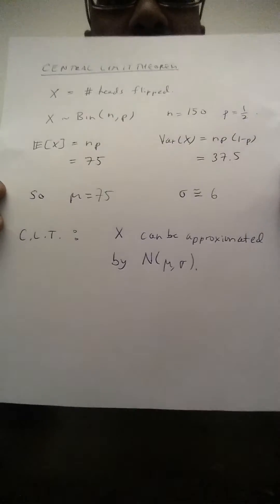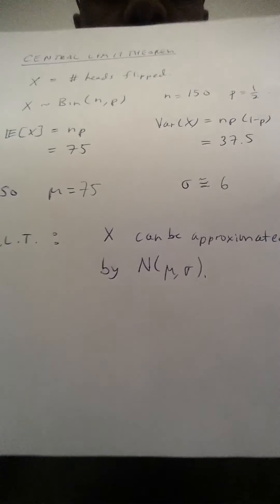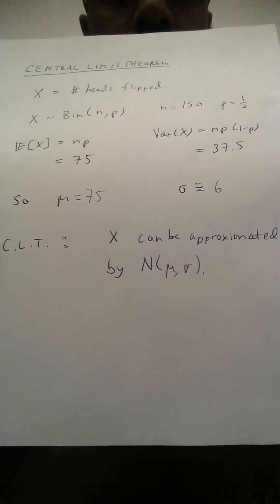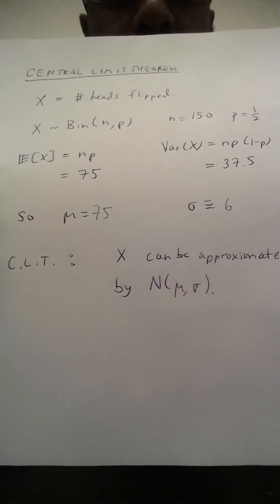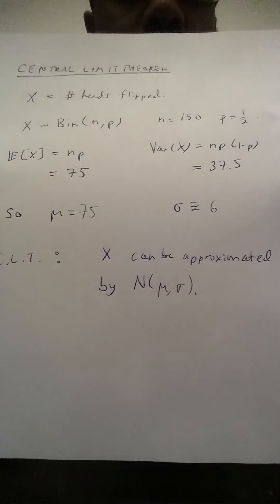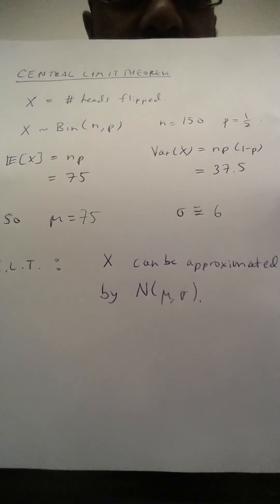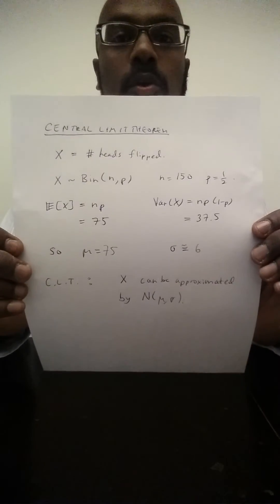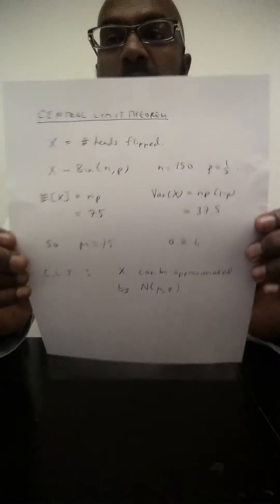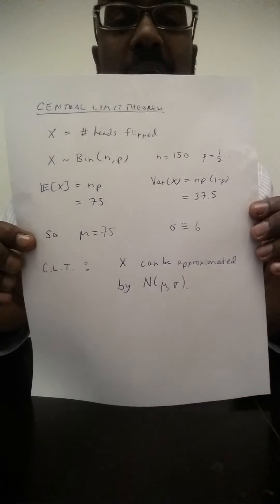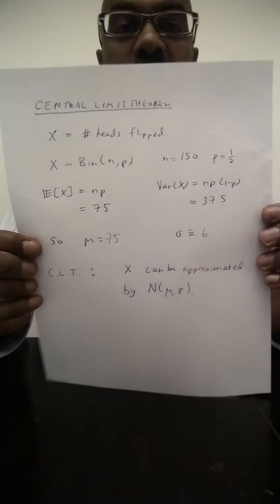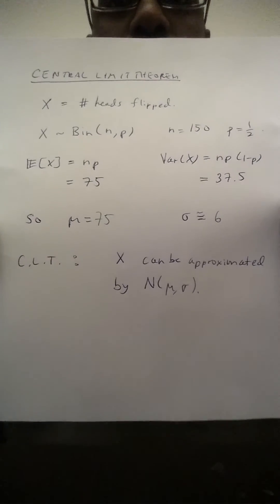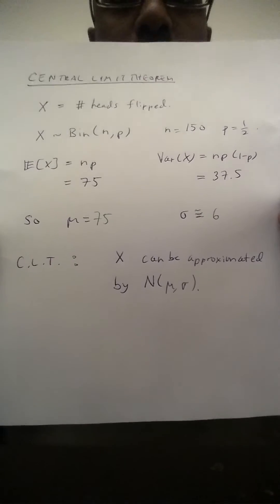The central limit theorem tells us the following. It tells us that X can be approximated by a normal distribution with mean mu, the same mean we had, and standard deviation sigma, the sigma we had above. So the problem of estimating the probability that we have at most 63 heads can be done by using the normal distribution instead, and we have our rule of thumb to approach that problem.